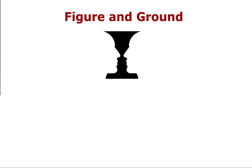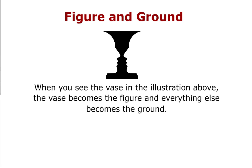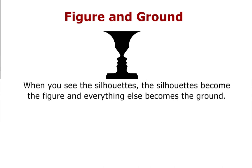Let's look at a visual example of figure and ground organization. When you see the vase in the illustration, the vase becomes the figure and everything else becomes the ground. When you see the silhouettes, the silhouettes become the figure.